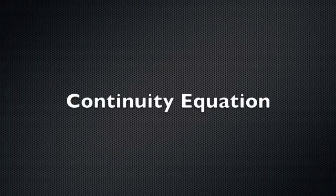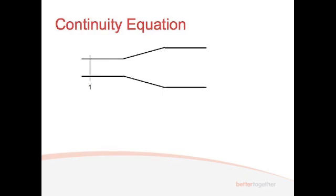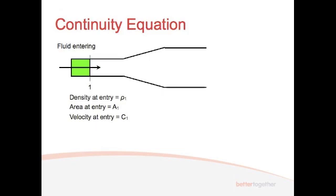When we're talking about these equations, we're dealing with what's called the continuity equation. Say we've got a pipe that looks like a funnel — I have a funnel here. We've got flow entering at point one, with a density of rho one, an area of entry A1, and a velocity of entry C1. From the mass flow rate equation: M1 equals rho one times A1 times C1 — density multiplied by area multiplied by velocity — giving us our mass flow rate in kilograms per second.